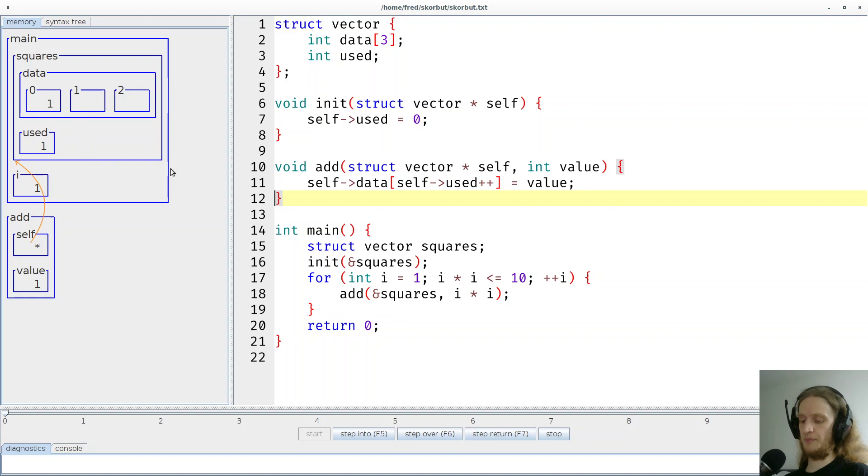Maybe let's do it a second time. So what's now the case? We want to store the value four at the index one, which would be here. So we expect a four here. And then used will be incremented from one to two. There we go.